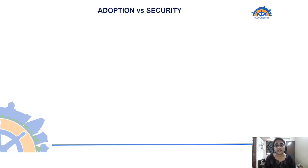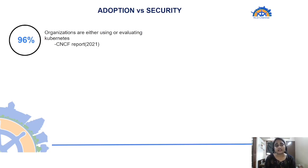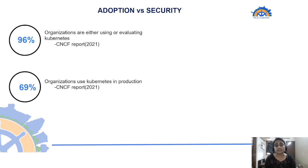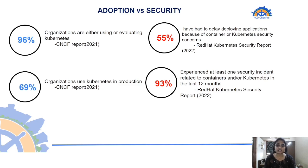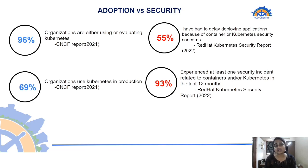Looking at the pattern of adoption versus security over the years: 96% of organizations are using or evaluating Kubernetes, and 69% use it in production. However, 55% of organizations have had to delay application deployment due to container and Kubernetes security concerns, and 93% experienced at least one security incident related to Kubernetes and containers in the last 12 months. As adoption increases, the attack surface expands, creating more room for security incidents.